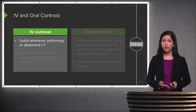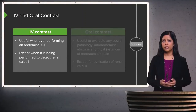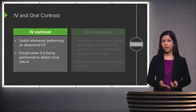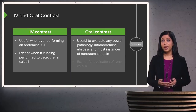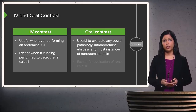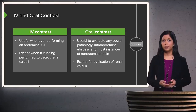Intravenous contrast is useful in almost all abdominal CT scans, with the exception of when the scan is being performed to detect renal calculi. Oral contrast is useful whenever you are trying to evaluate bowel pathology, any intra-abdominal abscess, and in most instances of non-traumatic abdominal pain. Again, the exception is when you are trying to detect renal calculi.